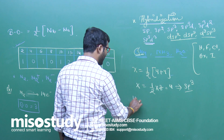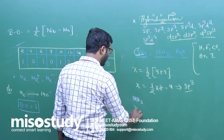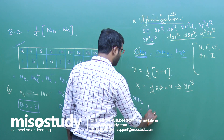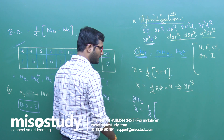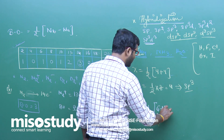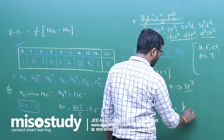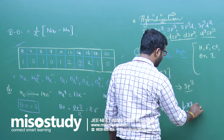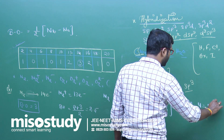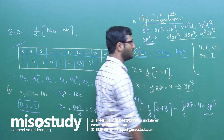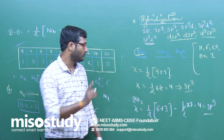Next is NH3. Again, x = 1/2 × (valence electrons of nitrogen + monovalent atoms). Nitrogen has 5 valence electrons and there are 3 hydrogen atoms. So x = 1/2 × (5 + 3) = 1/2 × 8 = 4. The hybridization of NH3 is sp³.